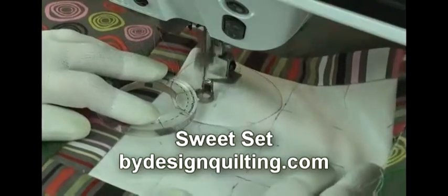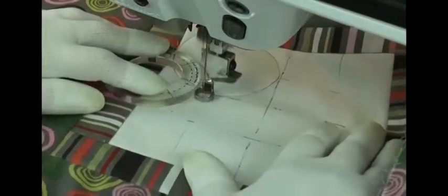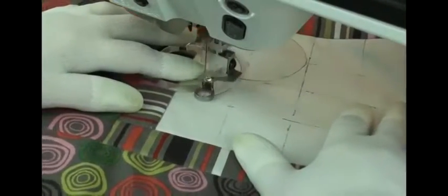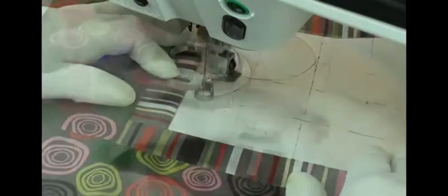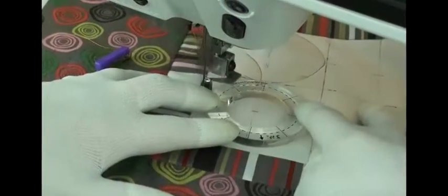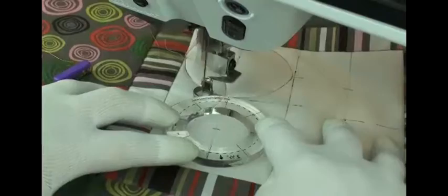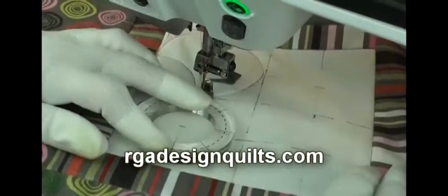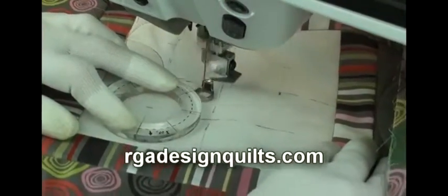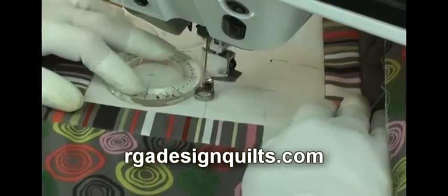I marked a one and a half inch grid on the block which will help me to place the templates. The template has markings that you can place on the marking line to center the template.